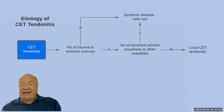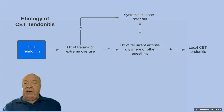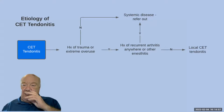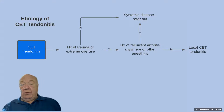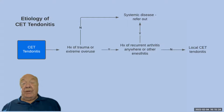Looking at the etiology of a tendinitis, this is either going to be a history of direct trauma to the tendon or extreme overuse — not familiar overuse where somebody uses their arm all the time, but severe, unfamiliar overuse. We can ask about a history of recurrent arthritis or inflammation elsewhere. If the answer to the history of trauma is no, then you must be thinking of systemic diseases and you need to refer, because you have no idea what's caused this inflammation. Make sure it's not a systemic problem, then you can take them back in and treat them.